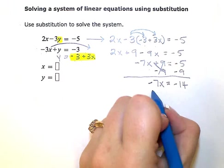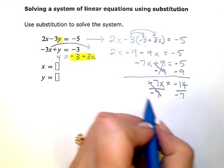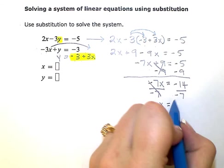When I simplify, I'll have negative 7x on the left and negative 14 on the right. My last step is to divide by negative 7. And when I simplify, x is equal to negative 14 divided by negative 7, which is positive 2.